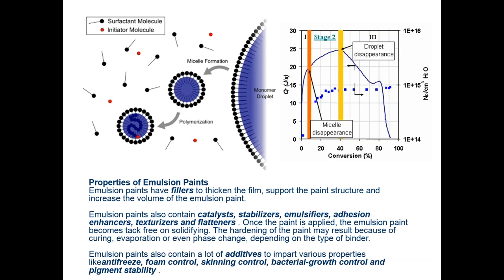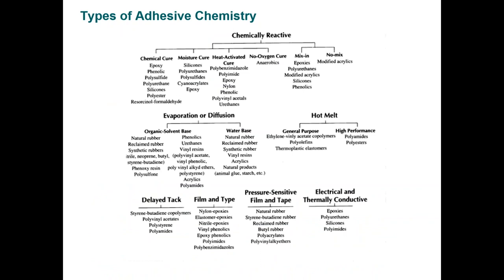Going back to the different types of adhesive chemistry, adhesive materials can be divided into chemically reactive, evaporative diffusion, hot melt, pressure-sensitive, film type, delayed tacky behavior, electrical — and also UV-cured adhesives. Adhesives play an important role in surface modification. In fact, one of the bigger problems in 3D printing of thermoplastic polymers is poor adhesion between printed layers, which relies on a melt-type association facilitated by heat. In 3D printing, it's very ripe for adhesive chemistry to get in.